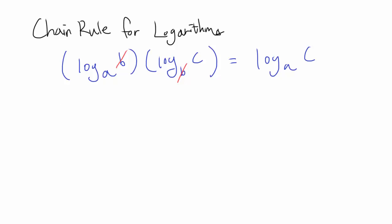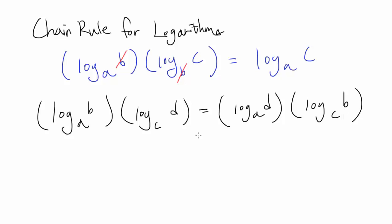We're going to try to prove it, but before proving this, we're going to prove something a bit more general. Log base A of B times log base C of D is equal to log base A of D times log base C of B. This is more general, so it has more applications, and once we prove this, the chain rule for logarithms is going to follow through right away.